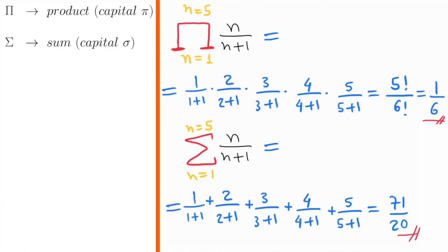Similarly, the capital sigma represents a sum. For example, sigma from n equals 1 to n equals 5 of n over n plus 1 equals 1 over 1 plus 1 plus 2 over 2 plus 1 plus and so on until 5 over 5 plus 1, which equals 71 over 20 in this example.